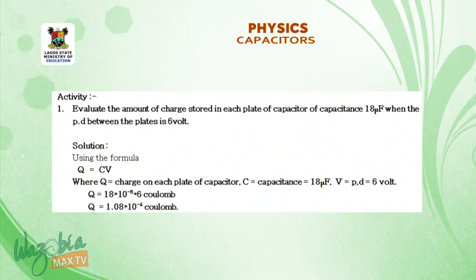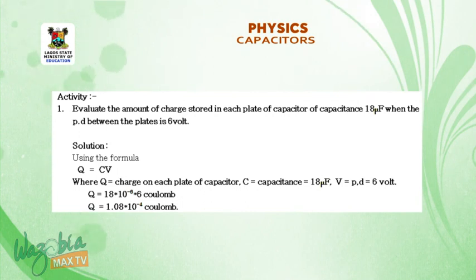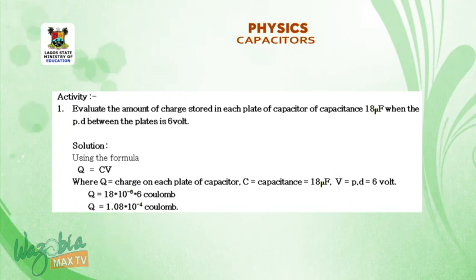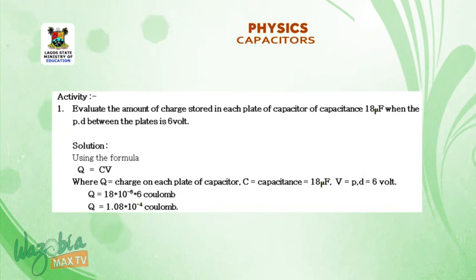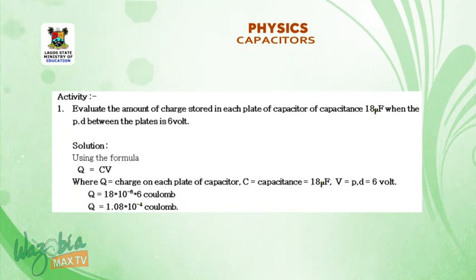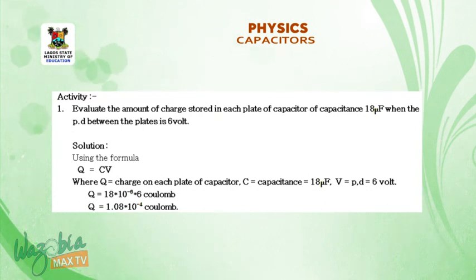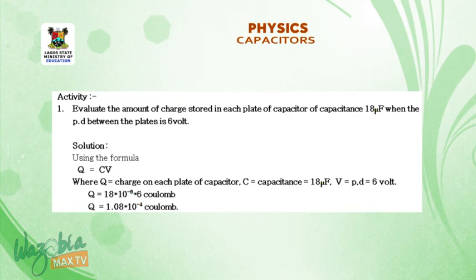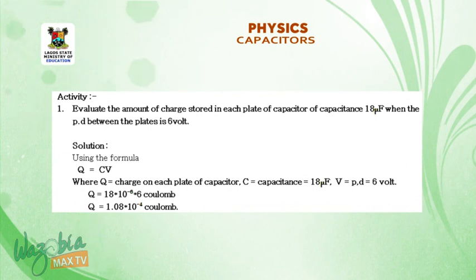Work example 1. Evaluate the amount of charge stored in each plate of a capacitor of 18 microfarad when the potential difference between the plates is 6 volts. Solution: use the formula Q equals CV, where C equals 18 microfarad and V equals 6 volts. Therefore, Q equals CV equals 18 times 10 raised to negative 6 times 6, which gives 1.08 times 10 raised to negative 4 coulombs.